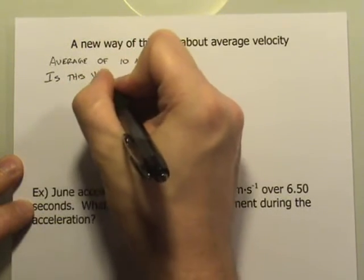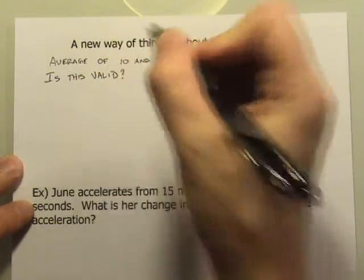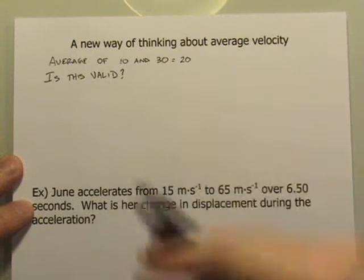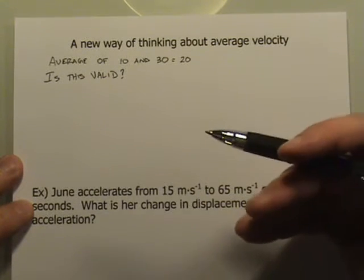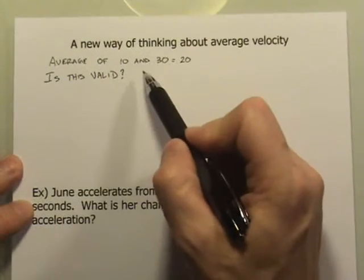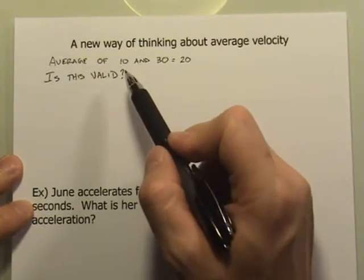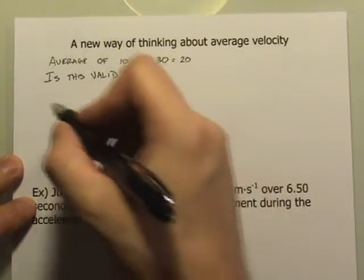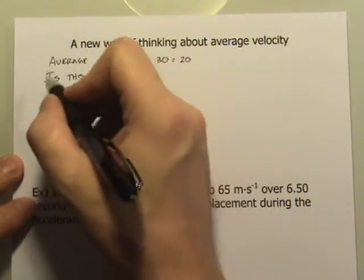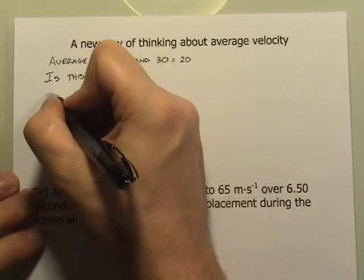Is this valid when we have accelerated motion? To just do this simple way of thinking about average velocity as just add the two velocities, the beginning and the end. Obviously, there are two velocities. There will always be two velocities, the initial and the final. And then I'll just cut them in half. Well, it turns out that it is valid under certain circumstances or certain conditions.